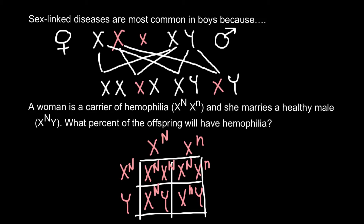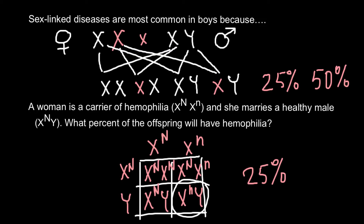So 25% of the total offspring would express this genetic disorder, which means 50% of the males would express it and none of the females. One out of four offspring total would have this genetic disorder. In our first example we used the forked-line method, and here we used the Punnett square, and as you see, the results are the same.